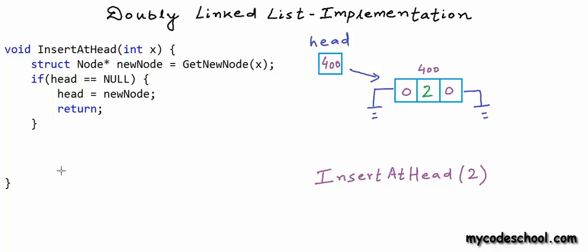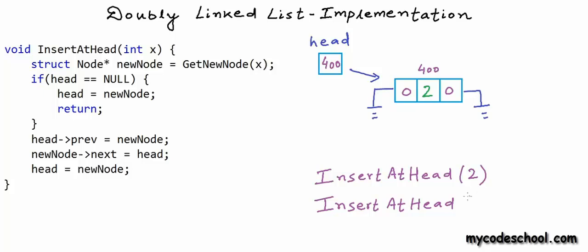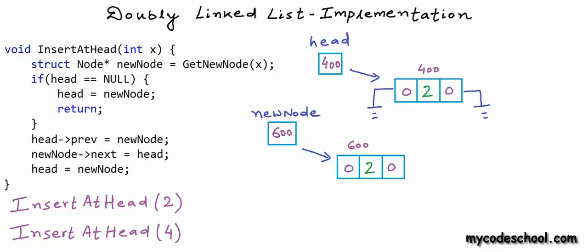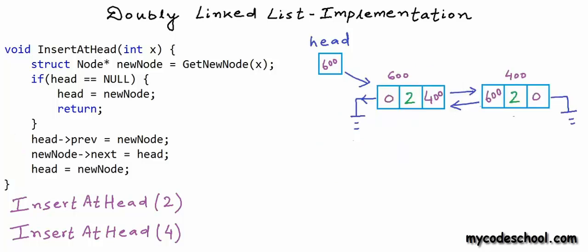For the case when the list is not empty, let's say we call insertAtHead passing 4. Once the new node is created, I'll first set the previous field of the existing head node to the address of this new node, building that backward link. Then I'll set the next field of the new node to the address of the current head. Finally, I set head to the address of the new node. This is how the list will look after insertion.